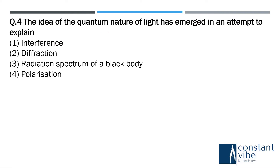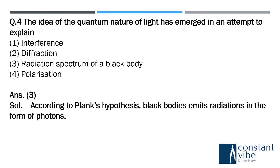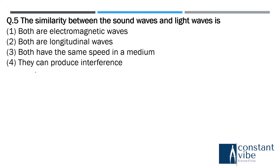The next question is: the idea of the quantum nature of light emerged in an attempt to explain which phenomenon? The answer is: according to Planck's hypothesis, black bodies emit radiation in the form of photons.